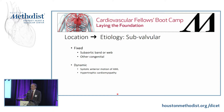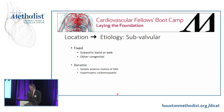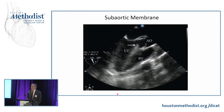Subvalvular location is also possible for aortic stenosis, and these can be either fixed — as in a subaortic web — or dynamic, as in hypertrophic obstructive cardiomyopathy or systolic anterior motion of the mitral anterior leaflet. Here we have an image of a subaortic web, and you can see the membrane is clearly below the level of the annulus. With color Doppler, you would see turbulence in the area between this web and the annulus.